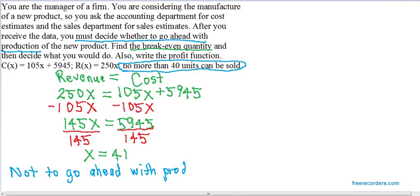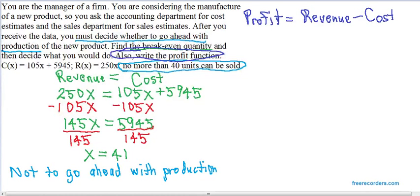Now, we're still not done with this problem because the problem also asks us to write the profit function. In business, profit is equal to revenue minus cost. So our profit function, p of x, is going to equal our revenue, which was 250x, minus the cost, which is 105x plus 5945.